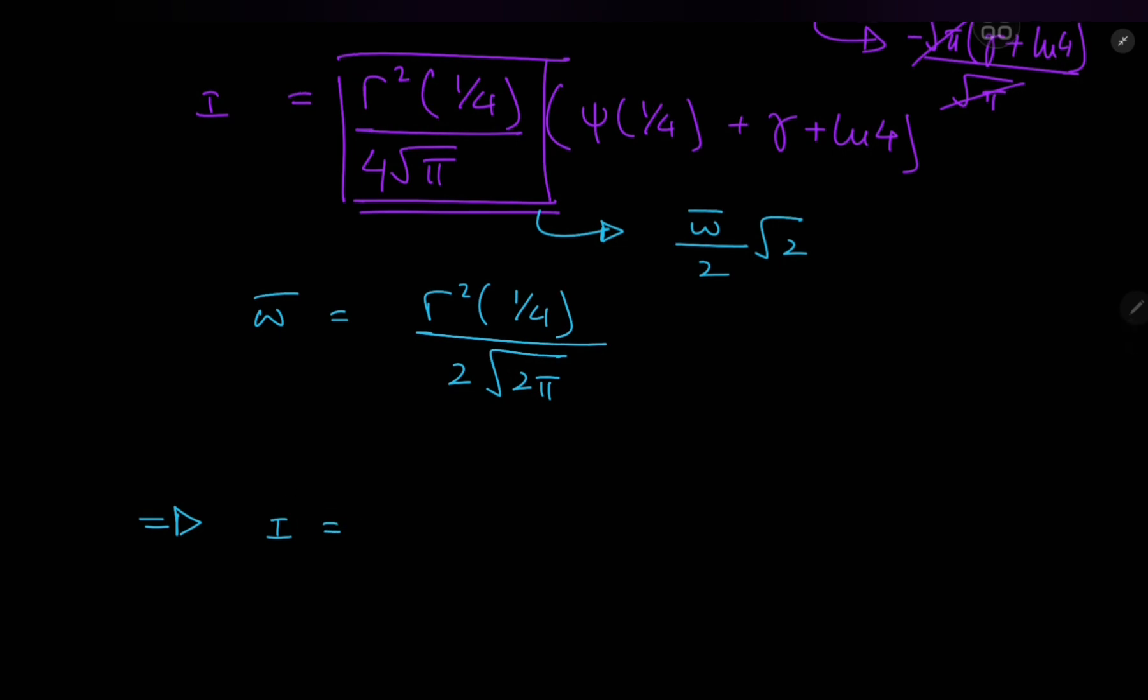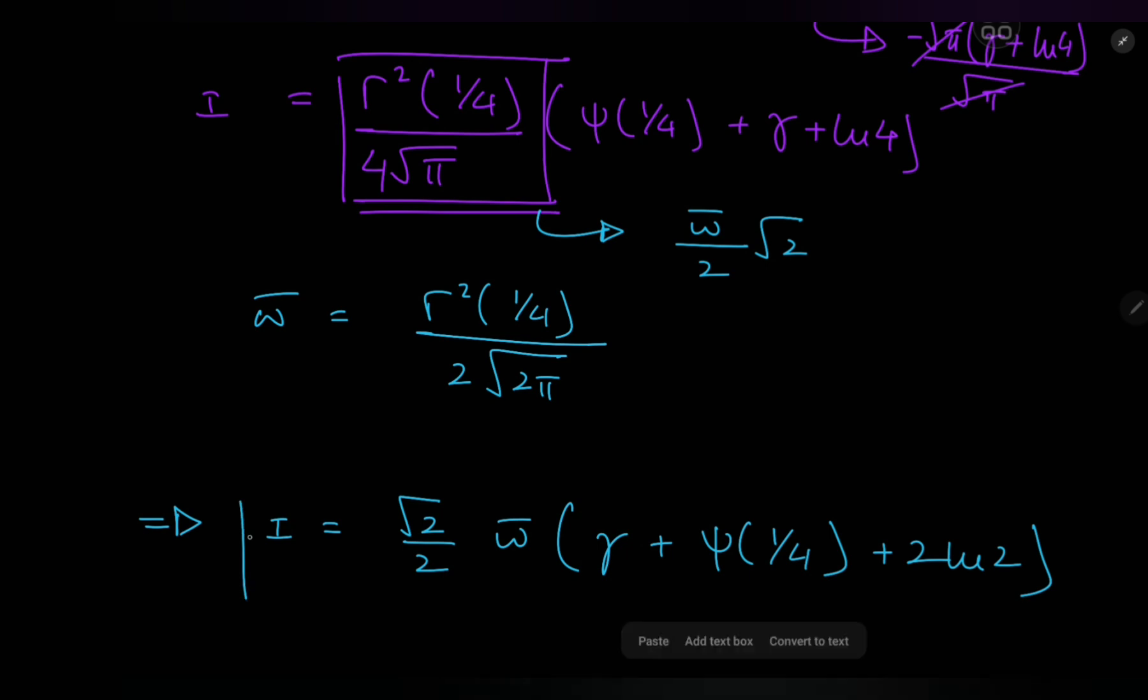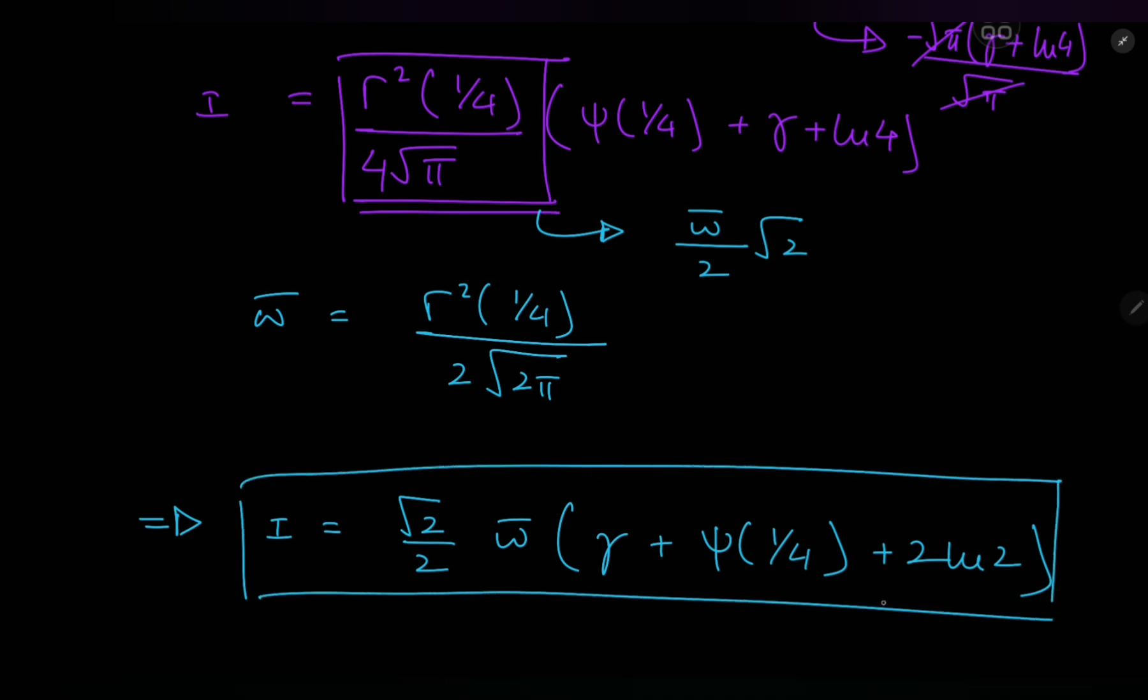So, this implies that our crazy-looking integral has a crazy-looking and beautiful result, indeed, involving all of these really nice constants. We have root 2 by 2 times the Lemniscate constant times the Euler-Mascheroni constant, plus the digamma function at a quarter, plus twice of log 2. This is epic. And I really hope you enjoyed the video. Be sure to like and subscribe. Thank you. See you next time.